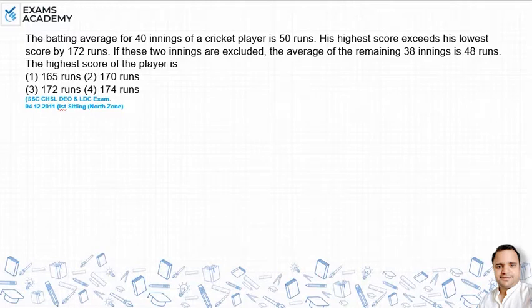Hello friends, now we are going to solve this problem. The batting average of 40 innings of a cricket player is 50 runs. His highest score exceeds the lowest score by 172 runs. If these two innings are excluded, the average of the remaining 38 innings is 48 runs. The highest score of the player is?